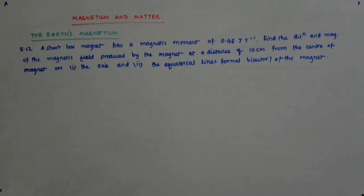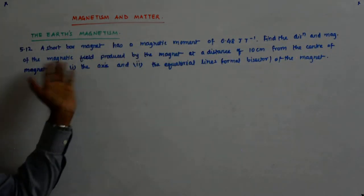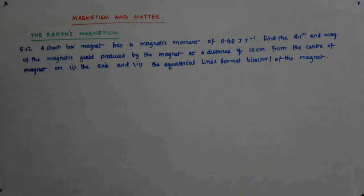We next come to 5.12. A short bar magnet has a magnetic moment of so and so. Find the direction and magnitude of the magnetic field produced by the magnet at a distance of 10 centimeters from the center of the magnet on the axis.